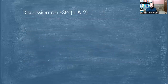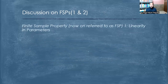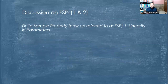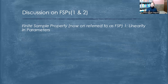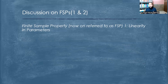The first finite sample property is linearity in parameters. When we say linear regression, what does linearity mean — linearity of parameters or linearity of variables? In econometrics, linear regression means linearity of the parameters, that is, the coefficients are linear; variables may or may not be linear. This justifies the fact that real relationships may not be linear in nature — they may be exponential, arithmetic, etc.